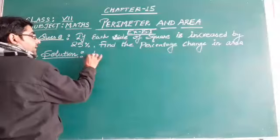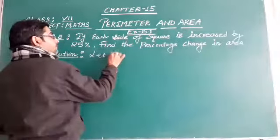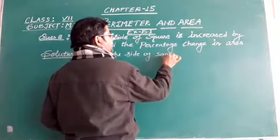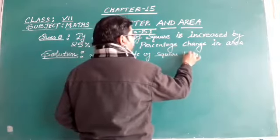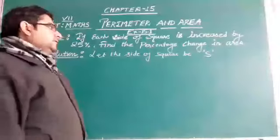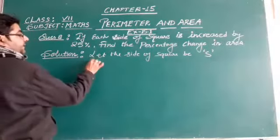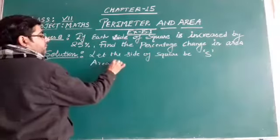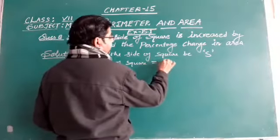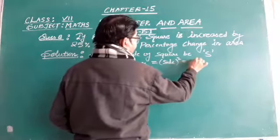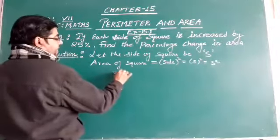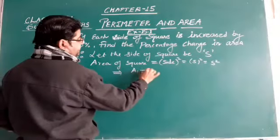Let us consider the side of square be S. The area of square will be side squared, that is S squared. Let it be area 1, so A₁ = S².